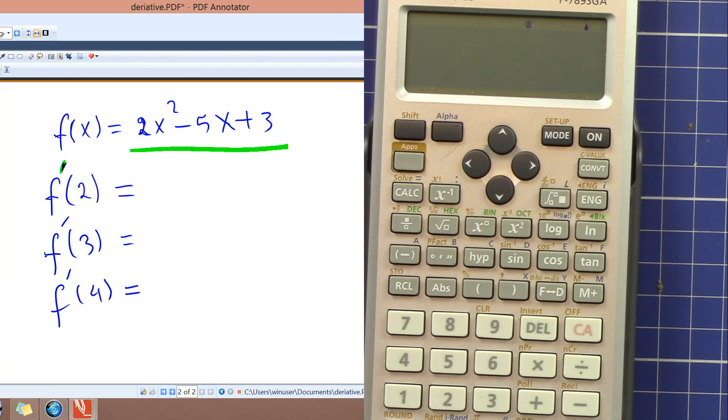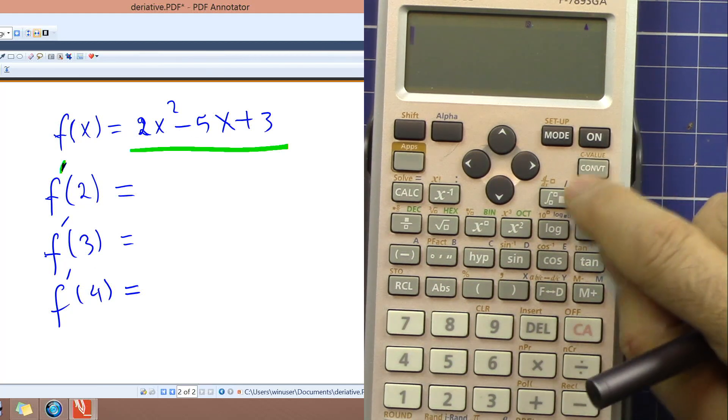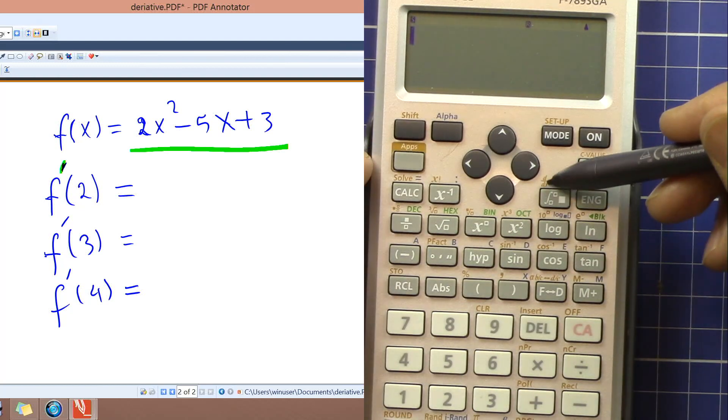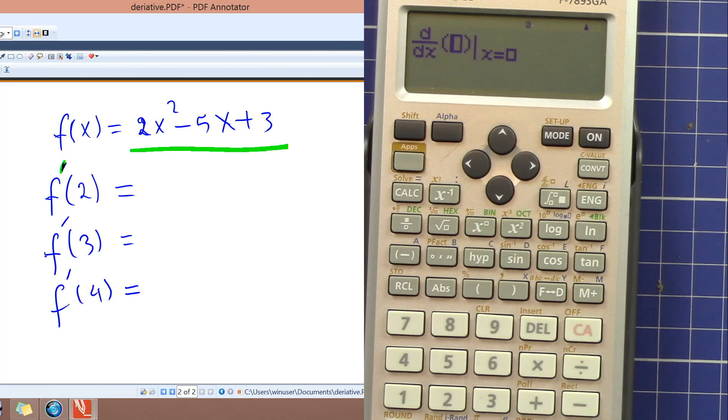So we want to evaluate the derivative at two seconds, at three, and four seconds, which means we will take the derivative and plug in the value. So the calculator will do that all at once for us. So press shift and then this is a derivative. Now enter our function: 2x squared minus 5x.